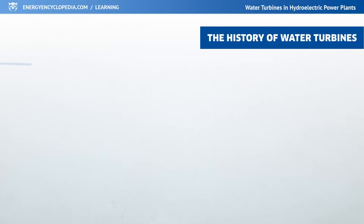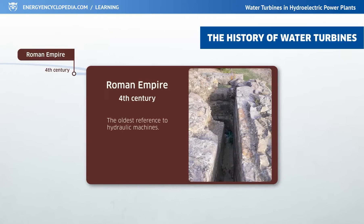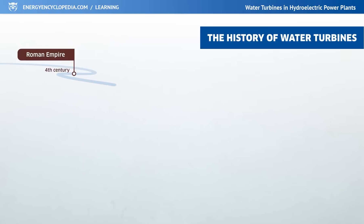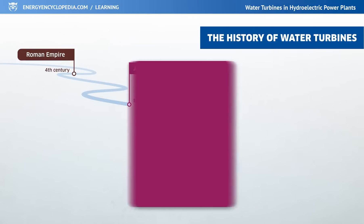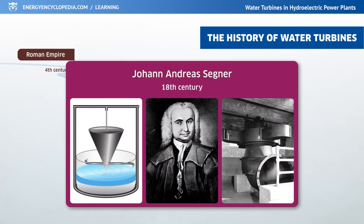Like all technology, water turbines also underwent certain historical development. The oldest references to hydraulic machines closely resembling turbines are from the area of the Roman Empire. The first reactive water turbine was developed in the 18th century by Johann Andreas Segner. His simple concept became an evolutionary step on the road to more modern turbines.